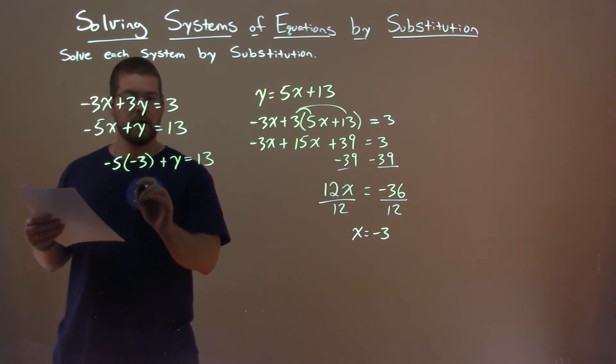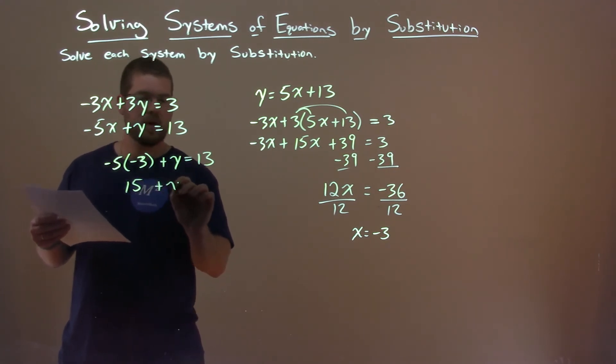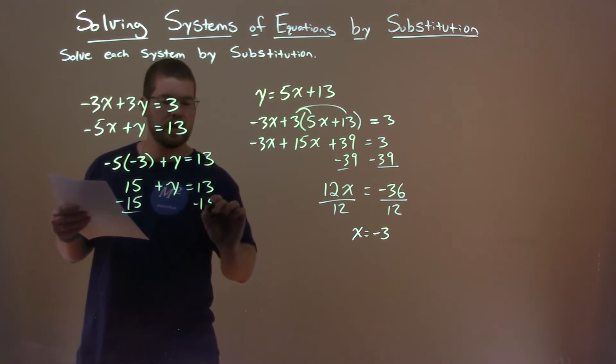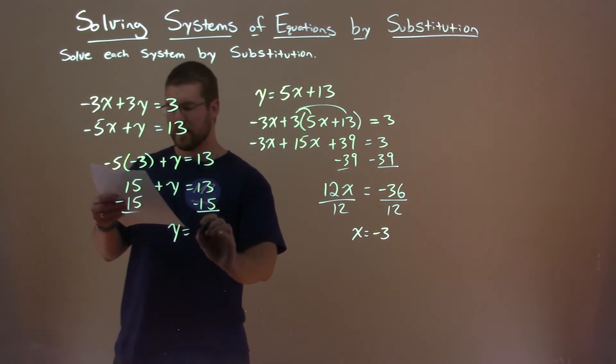We're solving for y. -5 times -3 is 15, plus y equals 13. Subtract 15 from both sides, y is by itself, and 13 - 15 is -2.